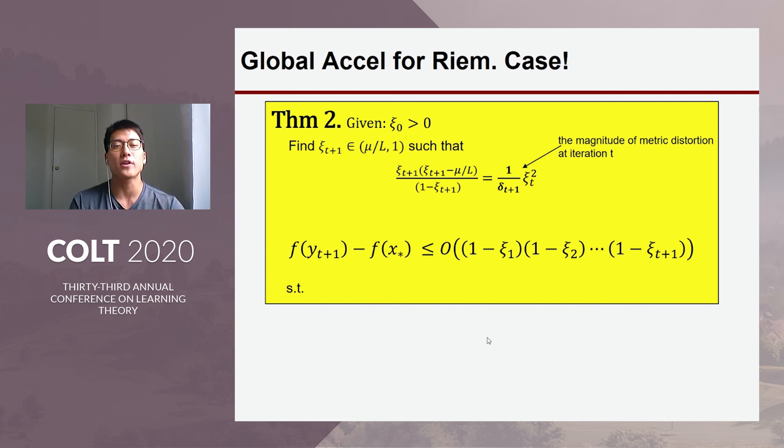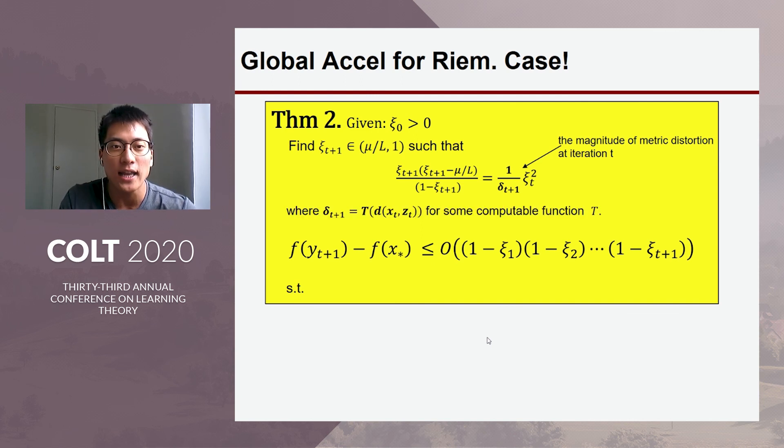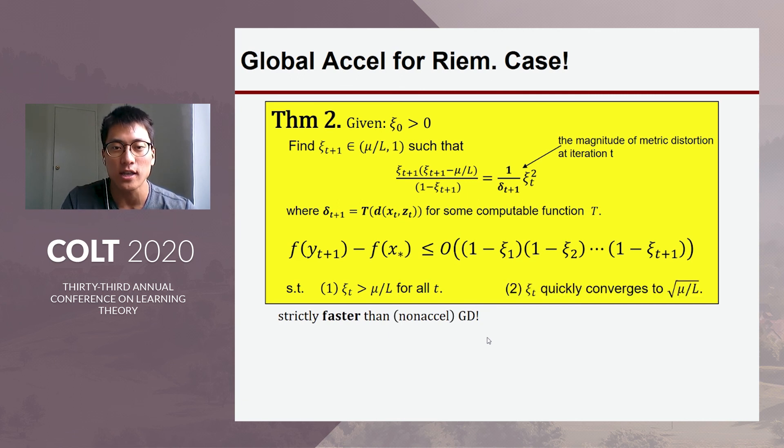So, our main theorem of the paper reads as follows. This is the non-linear equation appeared in the previous slide. And we just choose this particular computable, completely computable valid distortion rate. Then we get this linear fast convergence rate, where each iteration is strictly faster than non-accelerated gradient descent. And it quickly converges to the square root, which means it quickly achieves full acceleration.